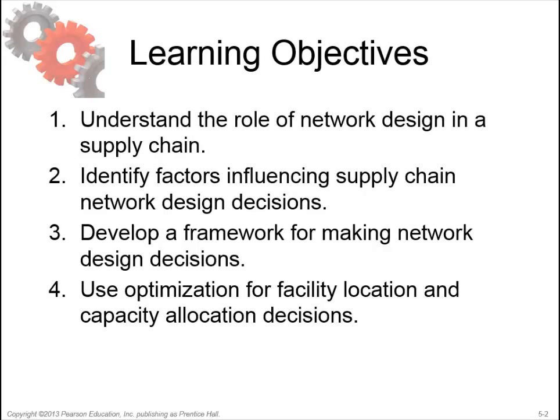The first learning objective is quite straightforward and relates to earlier chapters — the role of strategic supply chain design, which was mentioned in chapter 1 and chapter 2. The second learning objective, identifying factors influencing supply chain network design decisions, is more in depth. It is about factors in the environment and factors within the supply chain itself.